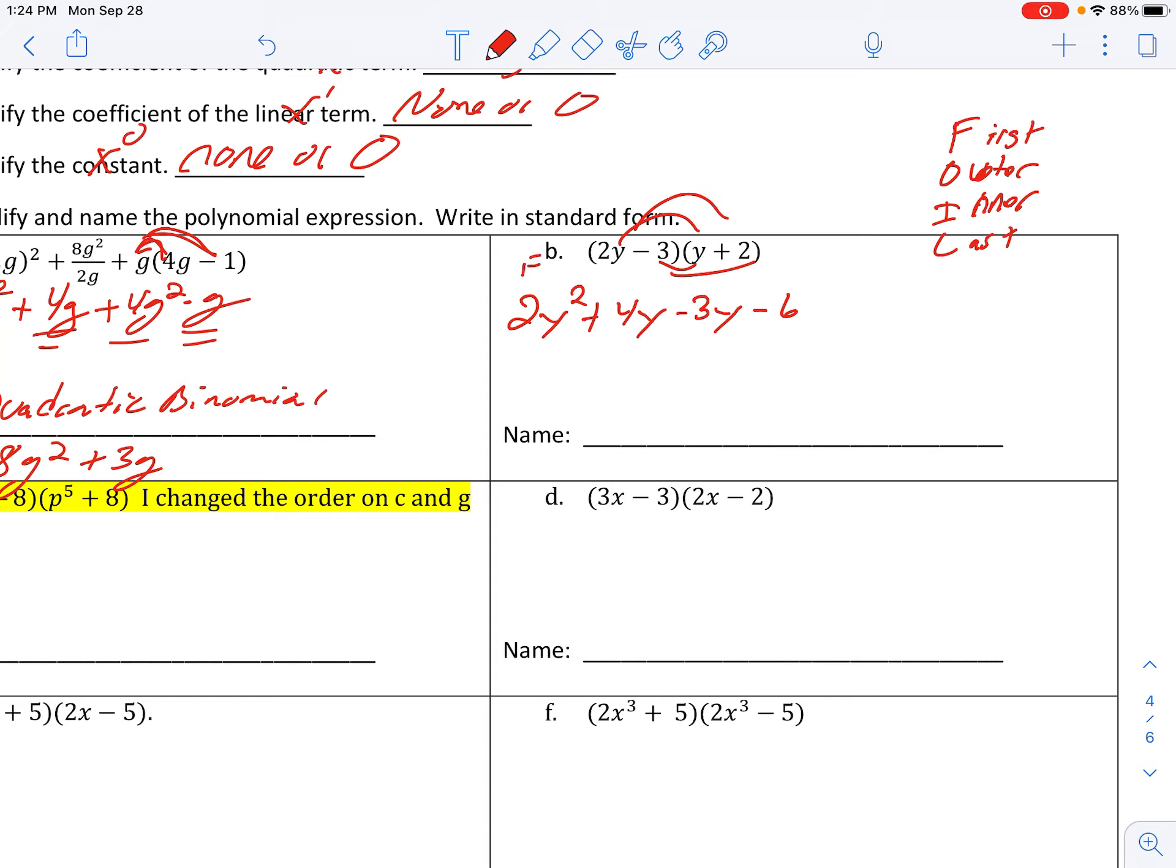So what I mean by FOIL then is this is the first. These are the outer terms. These are the inner terms. And these are the last terms. Okay, fine. It's just a little nice mnemonic device. But it does not work all the time. Who cares? Just distribute.